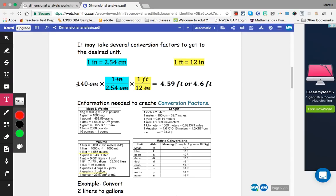So you multiply across 140 times 1 times 1 divided by 2.54 times 12. And that will give you this number. But you only have two significant digits in the beginning, so you can only have two significant digits in the end. So 4.6 ends up being your correct answer.